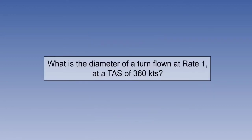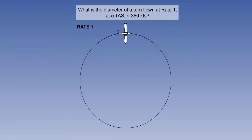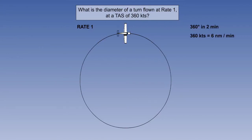To conclude the lesson, let's look at some straightforward calculations which might be encountered. Let's work out the diameter of a turn flown at rate one, at a true airspeed of 360 knots. A rate one turn is a turn through 360 degrees in two minutes, or a turn of three degrees per second. We now know it will take two minutes at a true airspeed of 360 knots to complete the turn. At 360 knots, the aircraft is travelling at six nautical miles per minute, so the total distance travelled in two minutes will be 12 nautical miles.